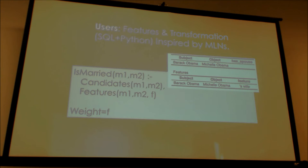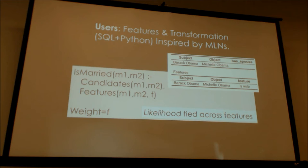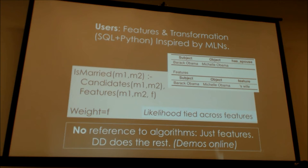We have a library called DeepDive Library that does the stock features and tries to learn the patterns in the sentence able to infer whether someone has spouse from very limited training. It's actually SQL underneath — we have a datalog-like language. You write the rules, the likelihood is tied across features with shared weights, you tell us what factors influence your decision, and there's no reference to algorithms. Just features, indicating the relationship, setting up the random variables and correlations. DeepDive does all the rest — regularization and everything else.